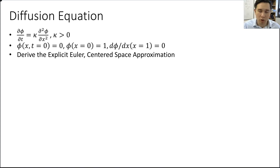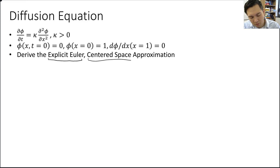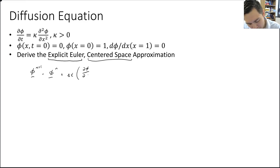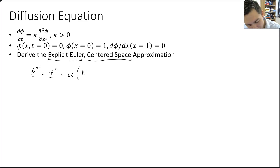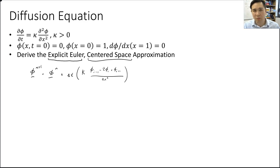Let's start by determining our finite difference equation. We'll use an explicit Euler equation with a centered space approximation. The explicit Euler equation is phi^(n+1) = phi^n + delta_t times d phi/dt evaluated at time index n. In our case, d phi/dt is kappa times d² phi/dx². Using a centered approximation, d² phi/dx² is approximated by (phi_{i-1} - 2*phi_i + phi_{i+1}) / delta_x², each term evaluated at time index n.